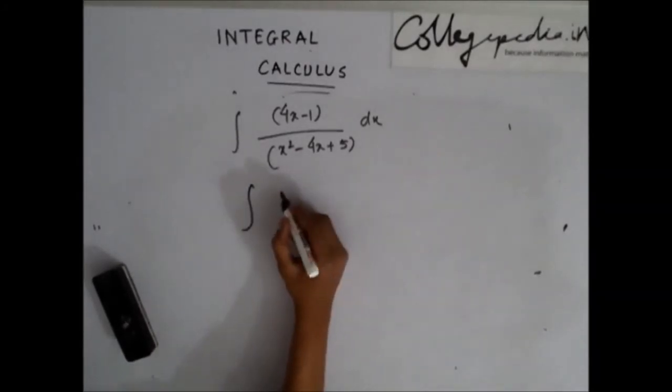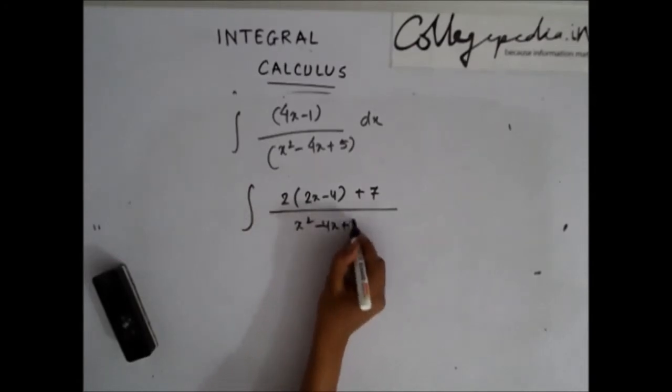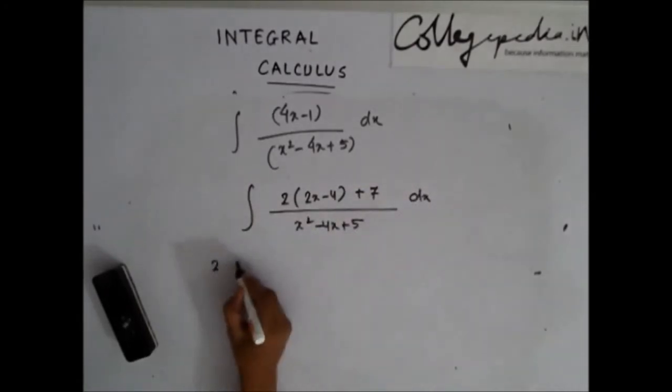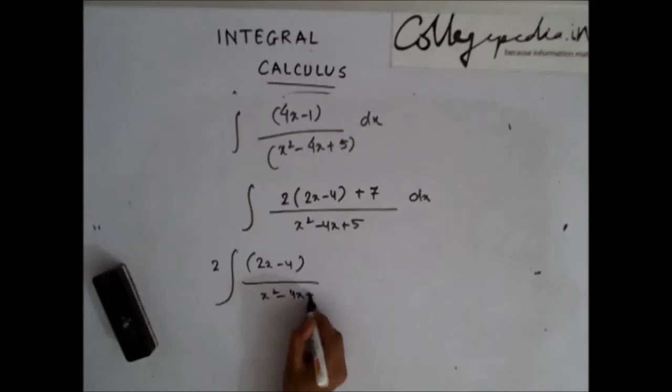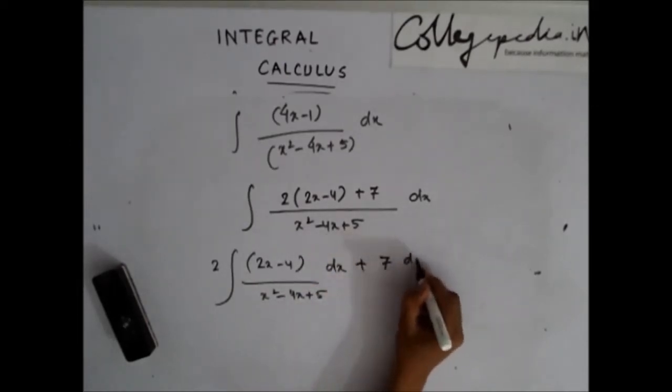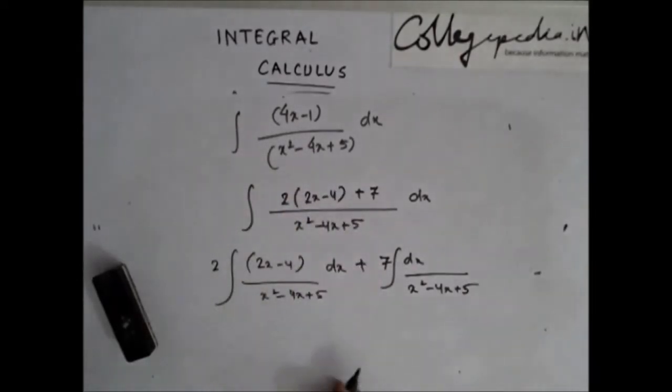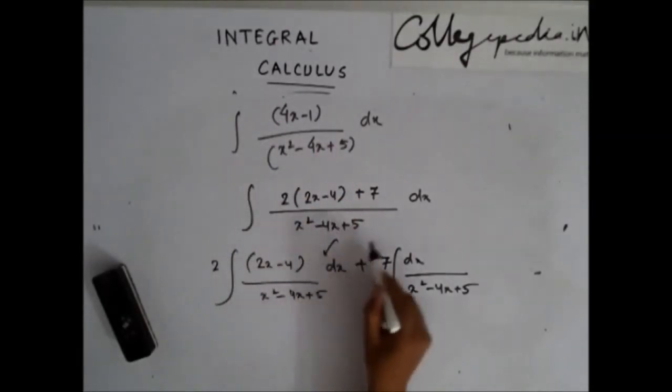So I can write 4x minus 1 as lambda times 2x minus 4 which is the derivative plus 7. Now you see that when I wrote this in this form, I was able to segregate this whole equation into two parts.